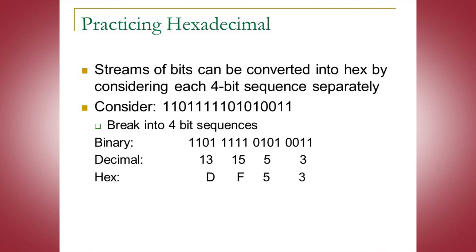Looking at the far left group — 1, 1, 0, 1 — if I do the conversion to decimal, that's 13. So 13 in hex is the letter D. Again, A is 10, B is 11, C is 12, and 13 is D.